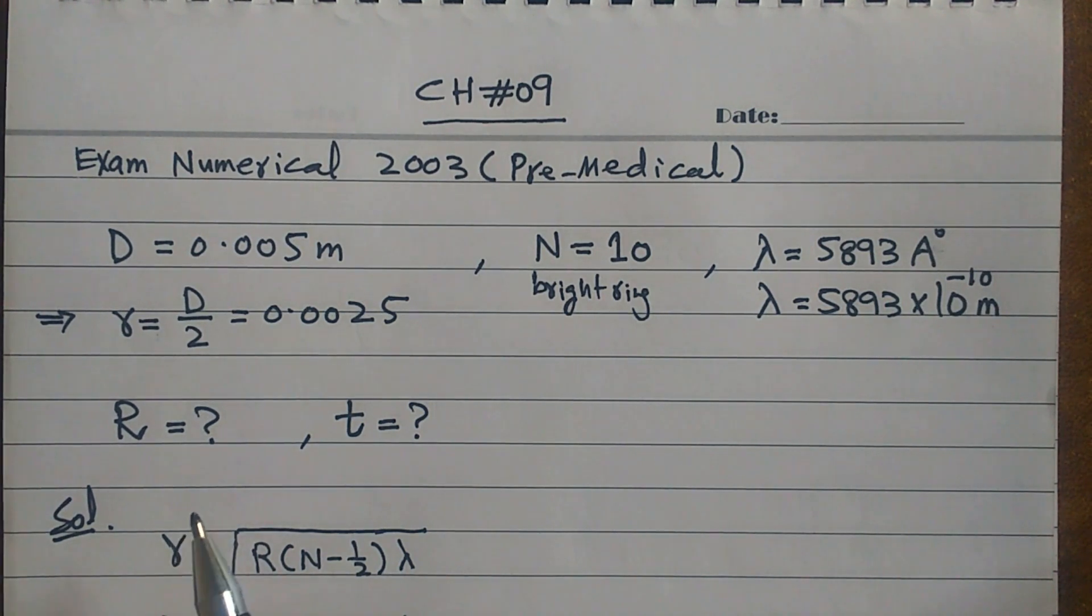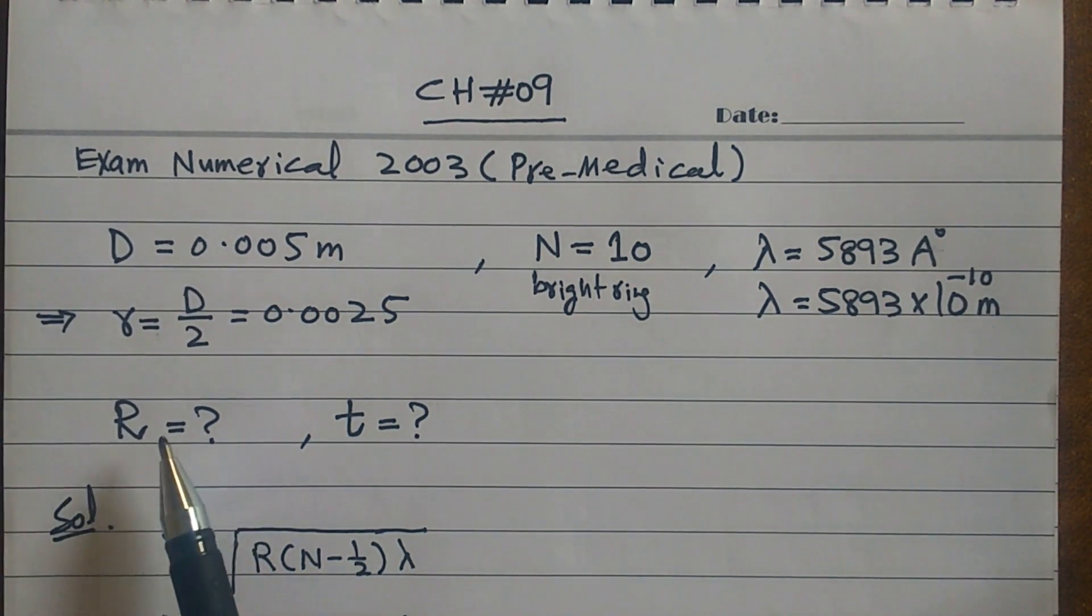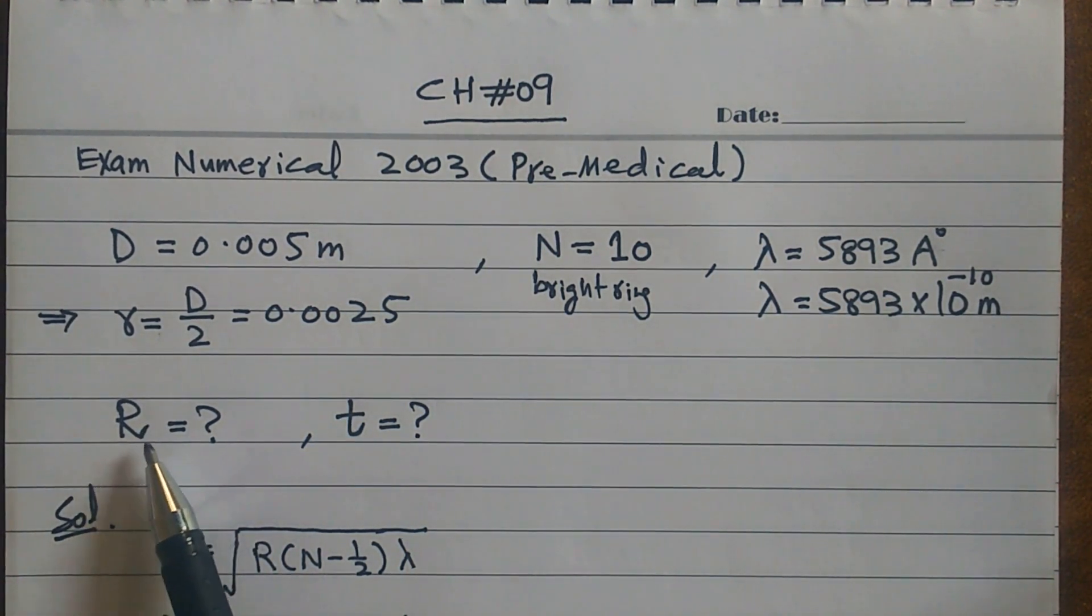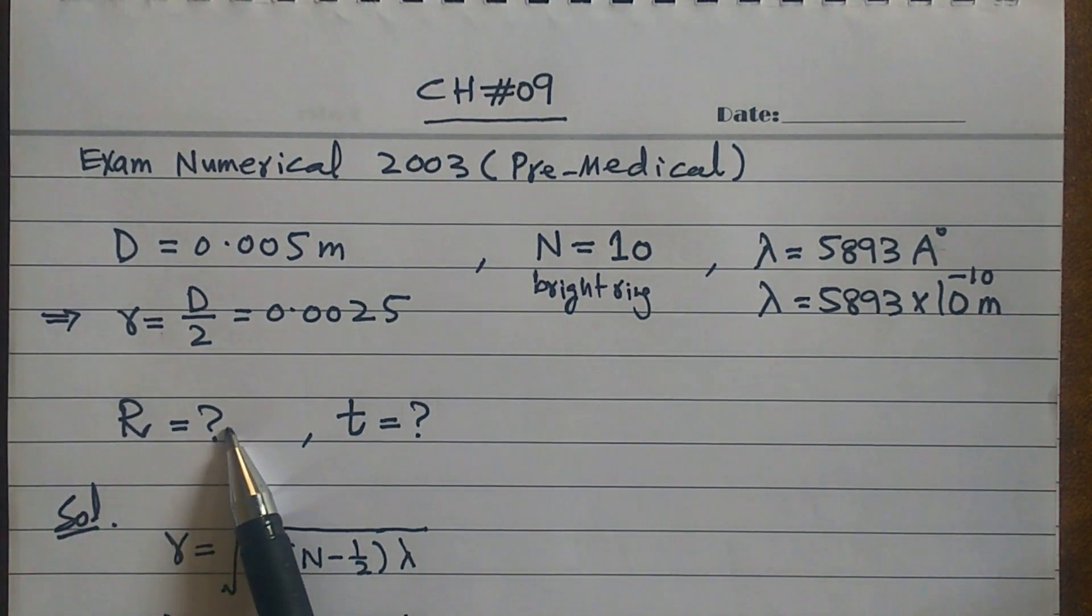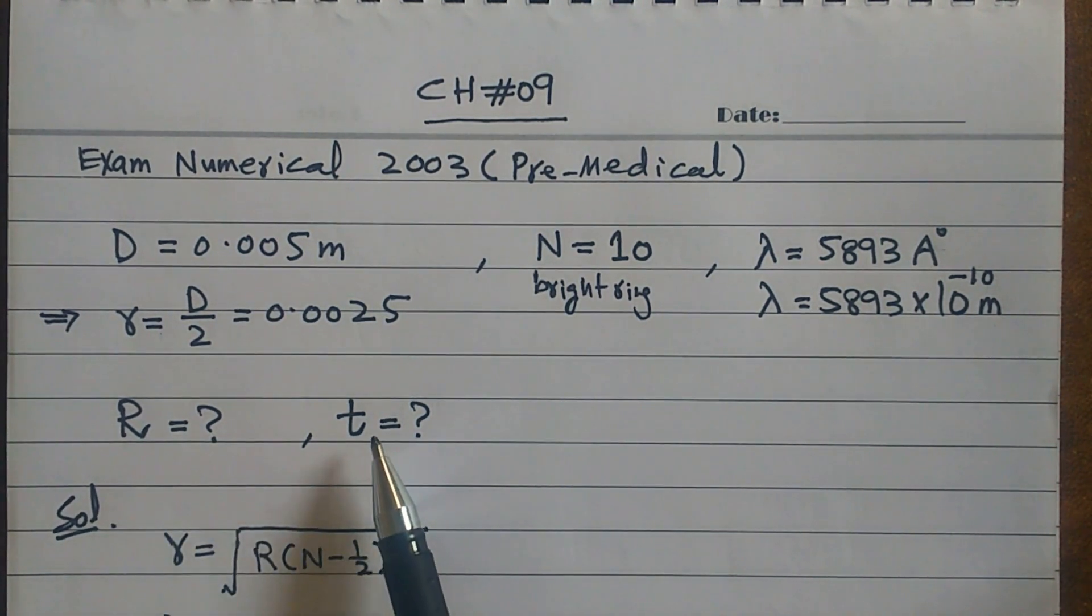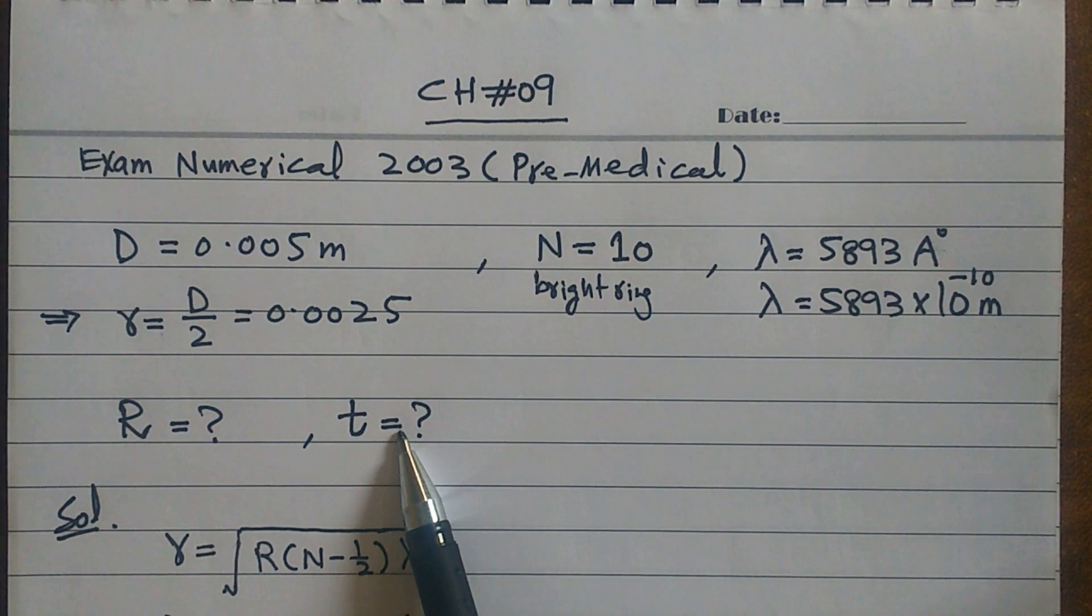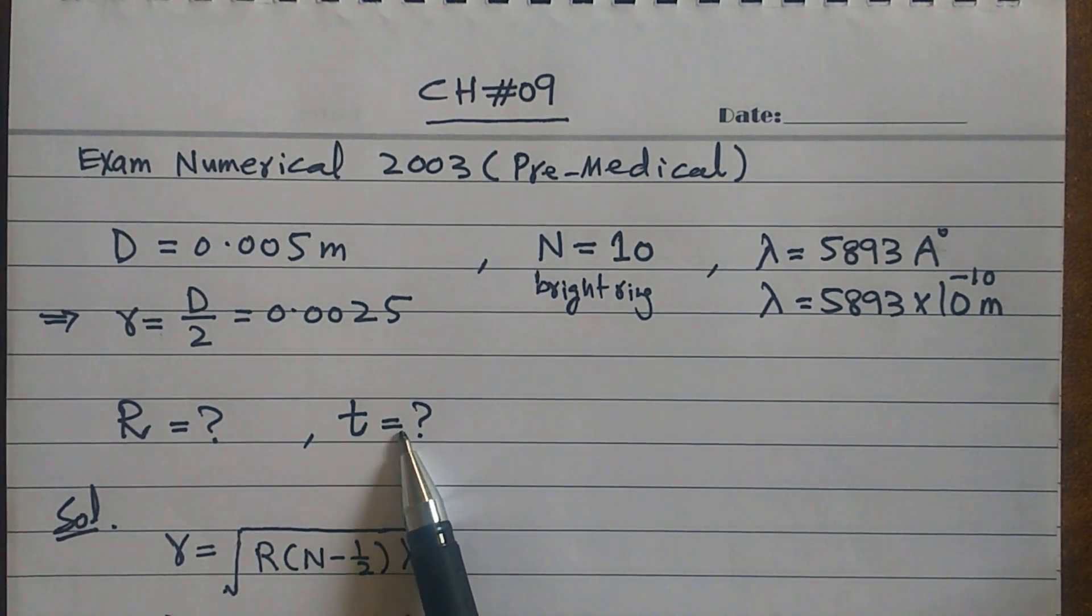He says what is the radius of curvature? The plane convex lens radius of curvature, and the thickness of the air thin film. The thickness of the air thin film - we have to tell you.